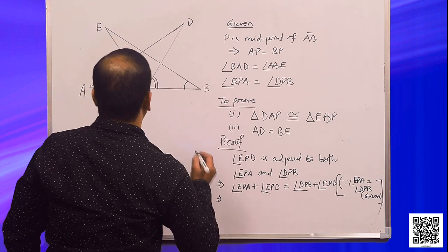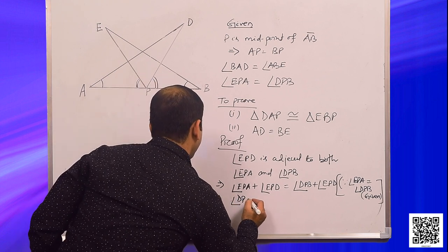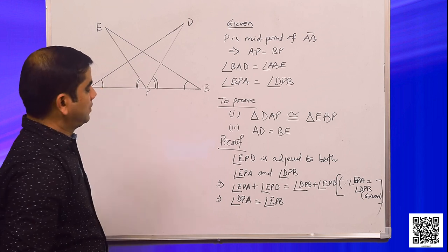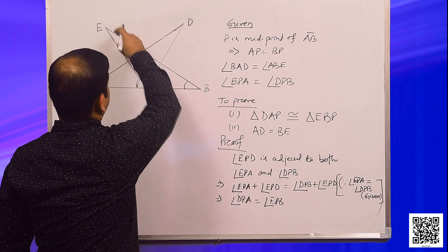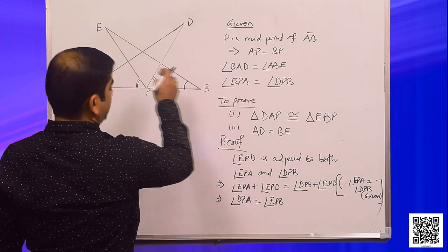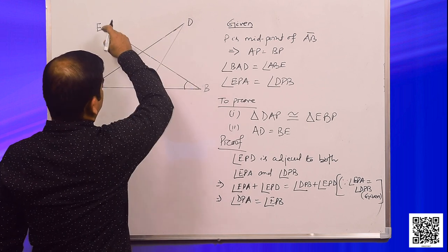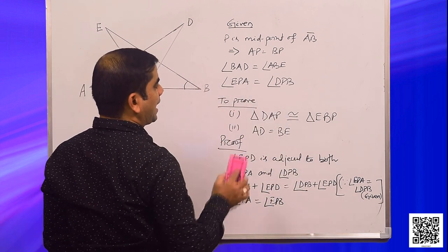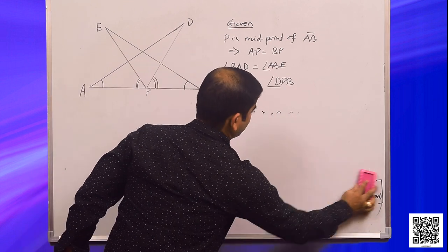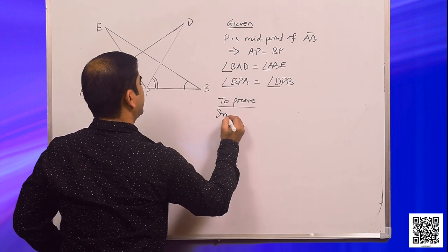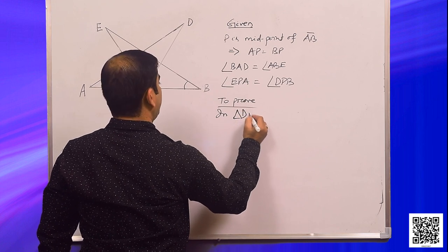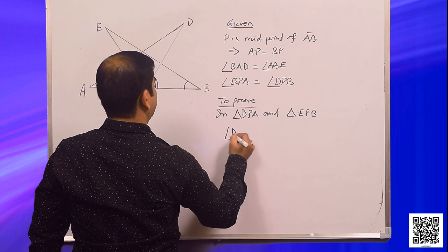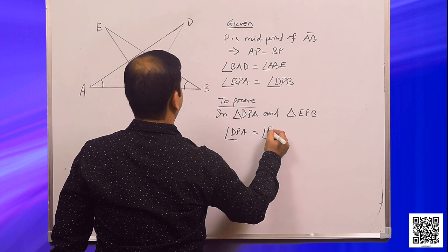That means angle DPA is equal to angle EPB. Because EPA plus EPD gives angle DPA, and DPB plus EPD gives angle EPB. Now, in triangle DPA and triangle EPB: angle DPA is equal to angle EPB — we have proved it.